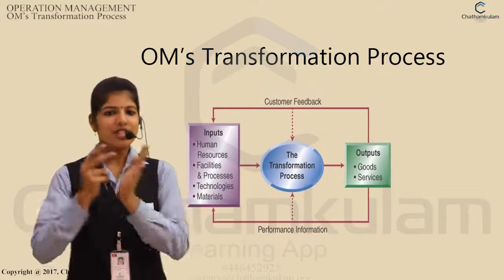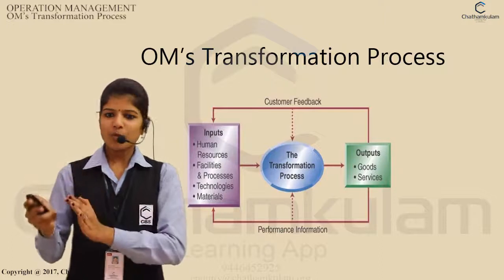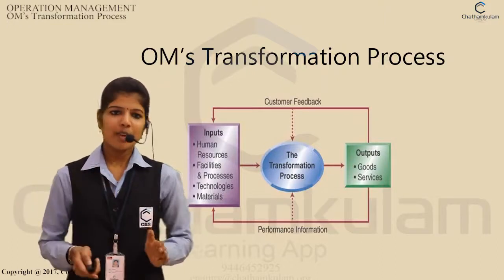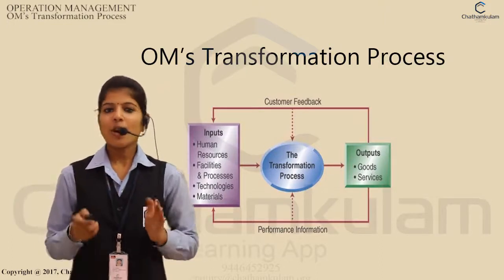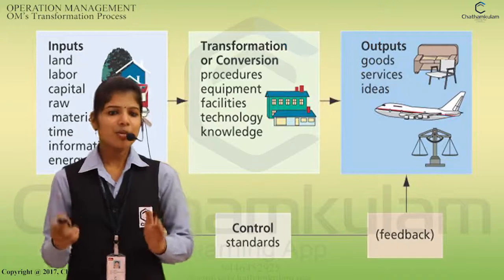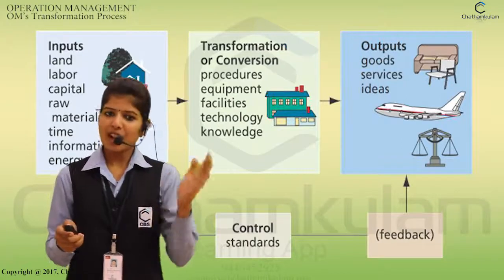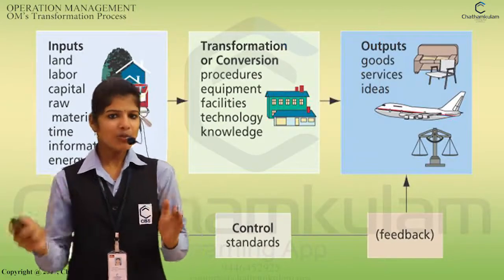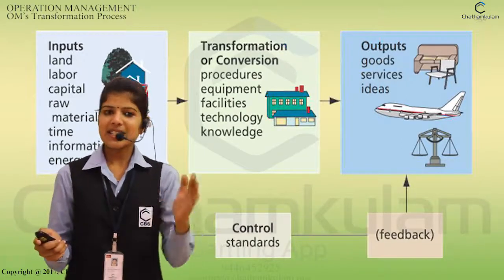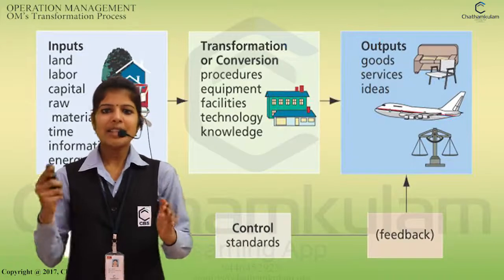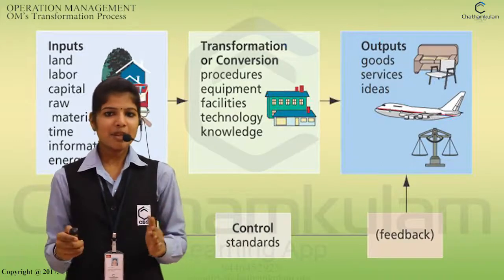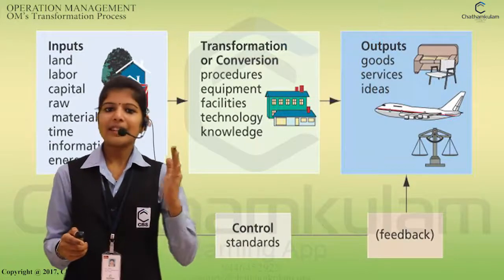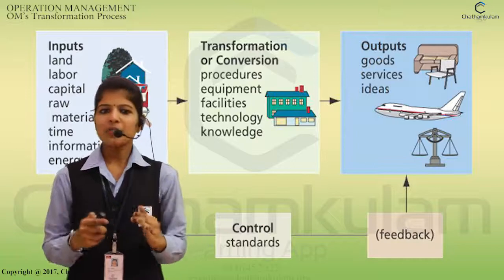It should be transformed into output. The outputs are the goods and services obtained from this. The OEM transformation role helps to add value. It increases the product value at each stage, and value added is the net increase between output product value and input material value.